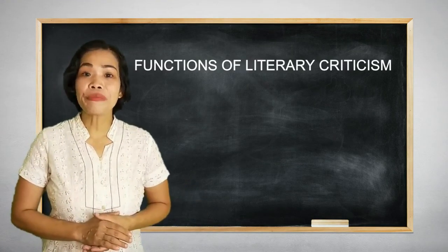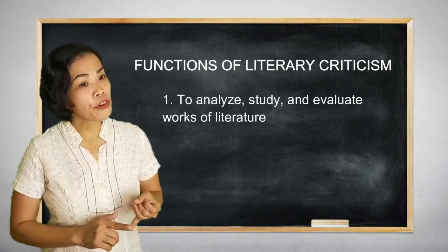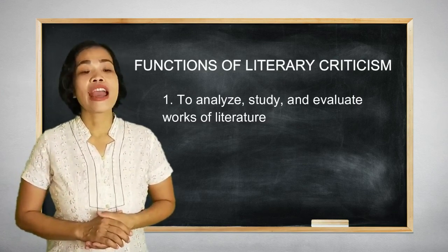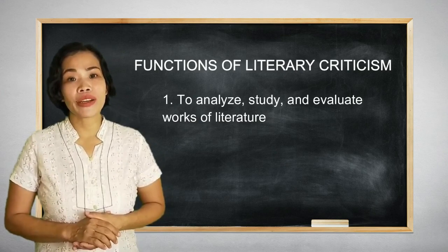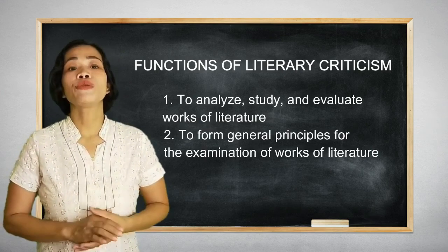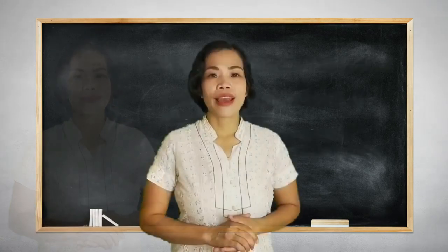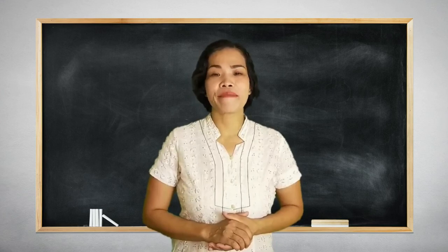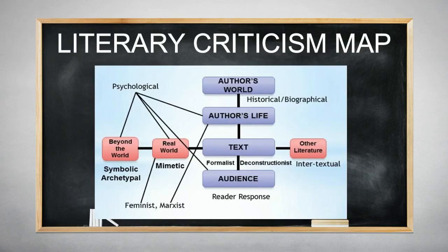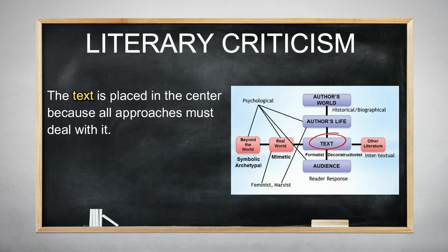Literary criticism has two main functions. First, to analyze, study, and evaluate works of literature. Second, to form general principles for the examination of works of literature. There are four critical variables in the literary criticism map: the author's world, the author's life, the text itself, and readers. The text is placed in the center because all approaches must deal with the text itself.